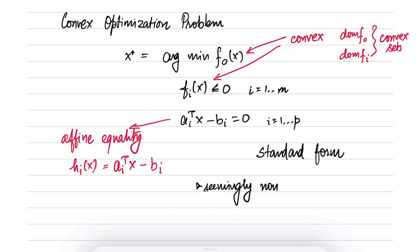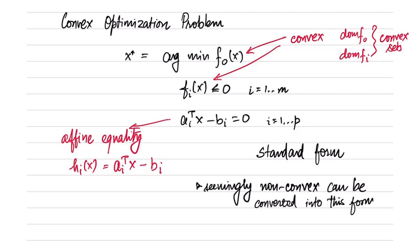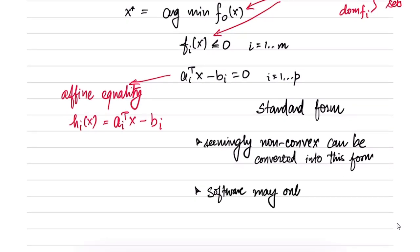Two things are very important here. First, seemingly non-convex problems — problems which are not of this form — can be converted by some manipulations into this form. Second, many software tools are written which will only recognize the standard form. So if you have a problem which is convex but not in standard form, you have to convert it so that the software can recognize it. And sometimes a problem may appear non-convex but can be converted into a convex form.